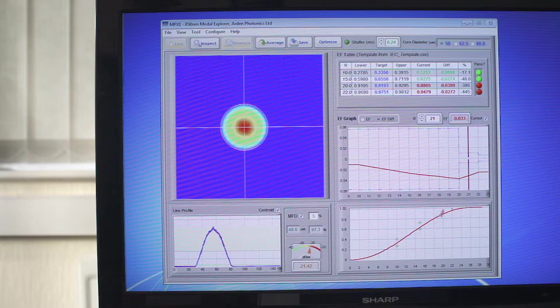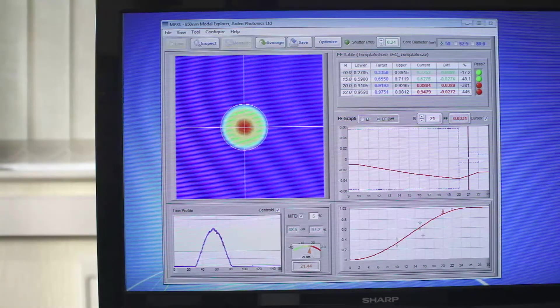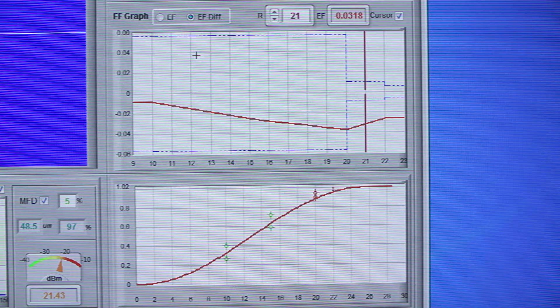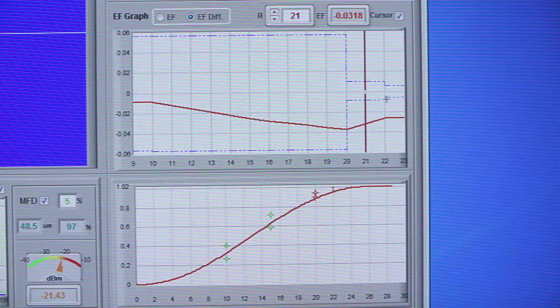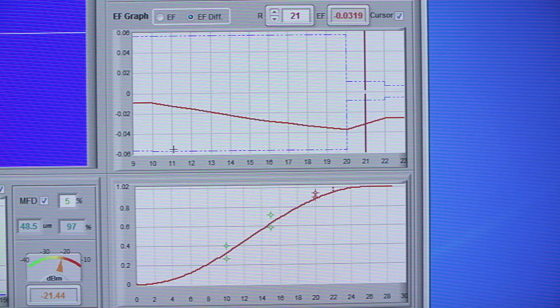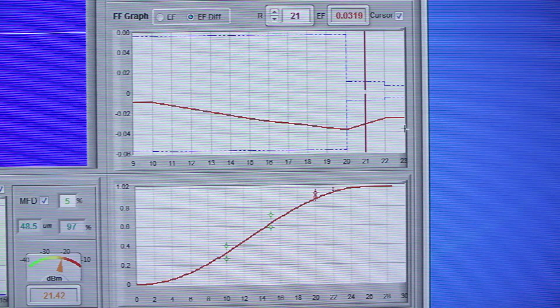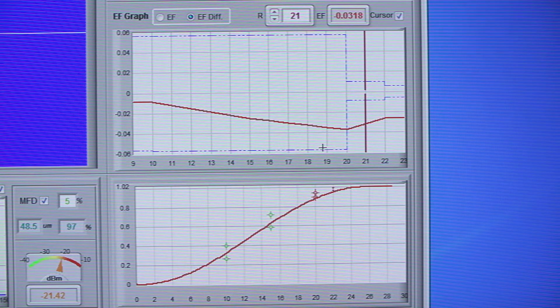You can see the encircled flux plot with the pass and fail criteria. There's the encircled flux difference plot. The dotted blue lines indicate the upper and lower boundaries of the IEC 61280-4-1 template. You can also select IEEE templates or create your own custom templates to meet your own requirements.